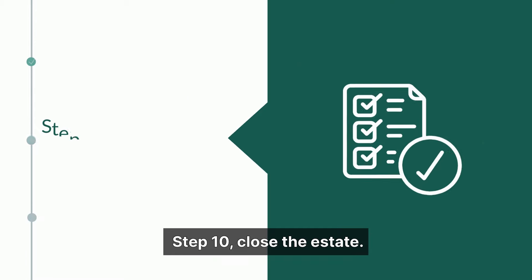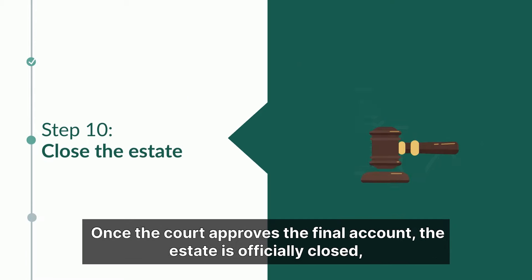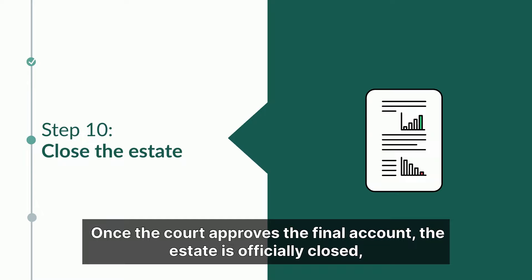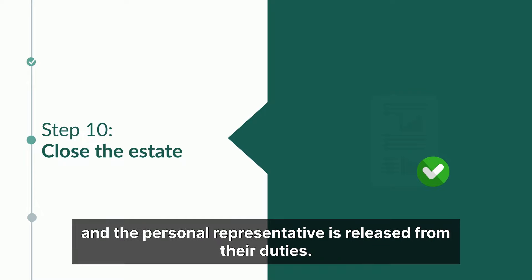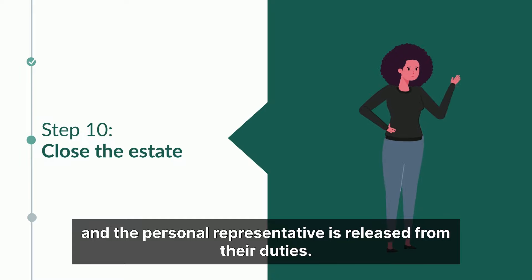Step 10: Close the estate. Once the court approves the final account, the estate is officially closed, and the personal representative is released from their duties.